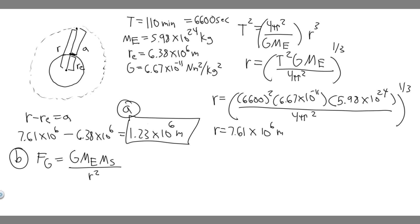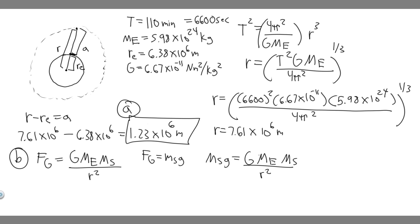We know that's the force of gravity, but we also know the force of gravity is just the weight — Ms times g. Both of these are the case, so we can set them equal. You get Ms × g = G × Me × Ms / r². If we divide both sides by Ms, they cancel. So you just get g = G × Me / r².